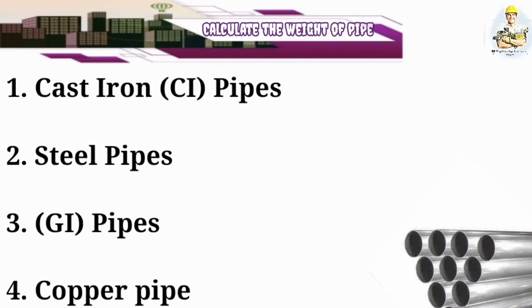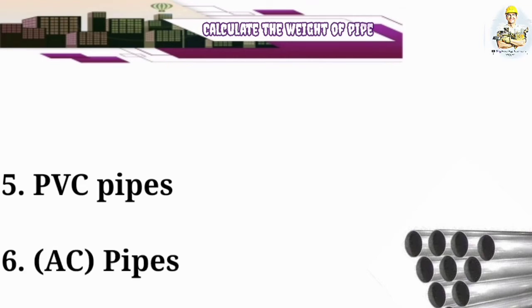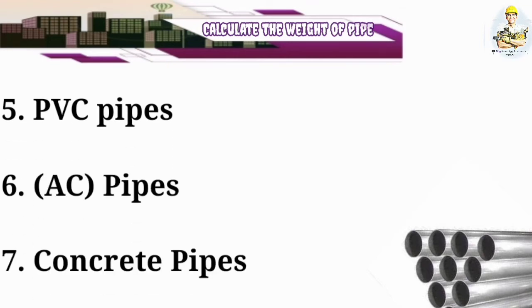The first one is cast iron pipe, also known as CI pipes. The second one is steel pipes. The third one is GI pipes. The fourth one is copper pipe. The fifth one is PVC pipes. The sixth one is AC pipes, and the seventh is concrete pipes.